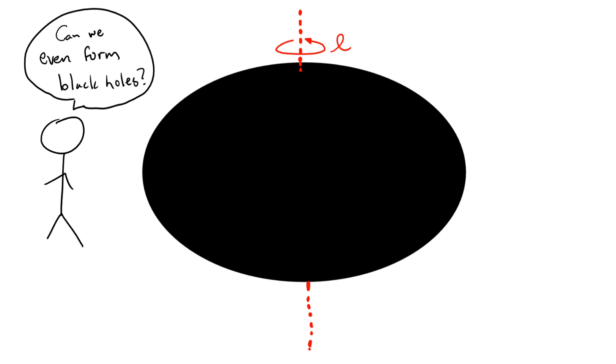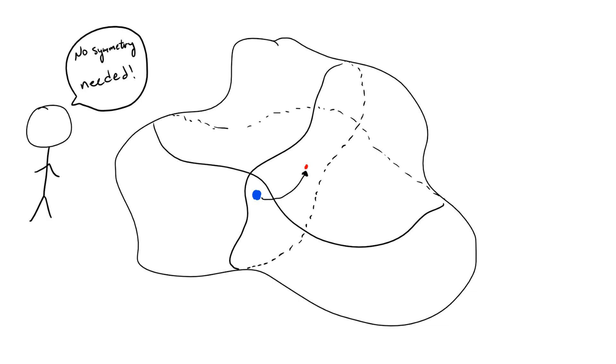What Penrose showed is that it's possible to define special, closed surfaces in spacetime where, once collapsing matter passes these surfaces, it's forced to a singularity. The amazing thing is that he was able to do this without ever relying on symmetry arguments.